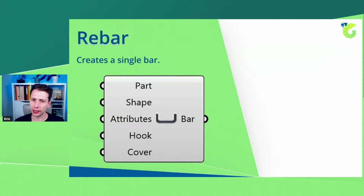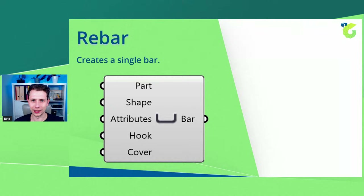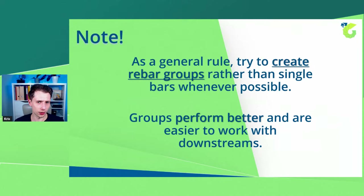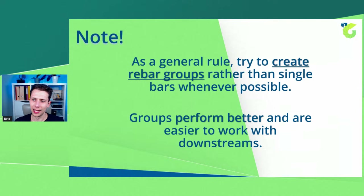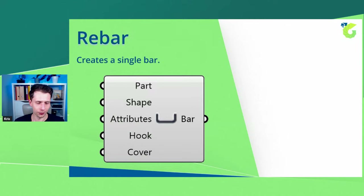Let's go through the components that can create reinforcement. The first is the single bar — called 'Rebar.' As input, we need the part, shape, attributes, hook, and cover. As a general rule, try to create rebar groups rather than single rebars. I personally prefer to use a rebar group with just one element and no center distance — it performs better and is easier to work with downstream.